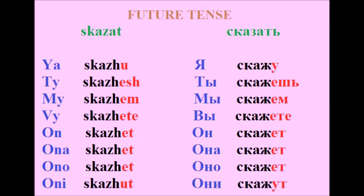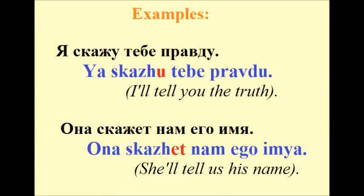Future tense of сказать: Я скажу, ты скажешь, мы скажем, вы скажете, он скажет, она скажет, оно скажет, они скажут. Examples: Я скажу тебе правду — I will tell you the truth. Она скажет нам его имя — She will tell us his name.